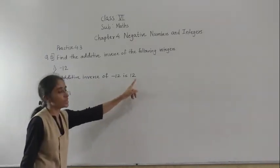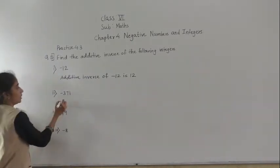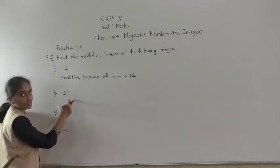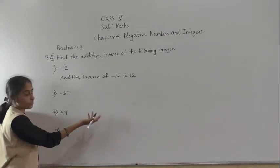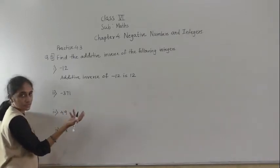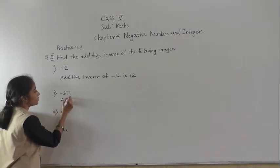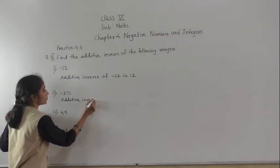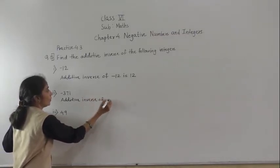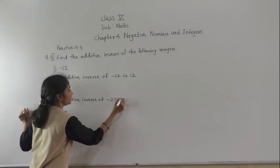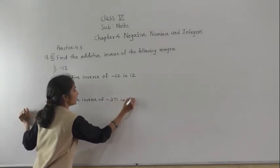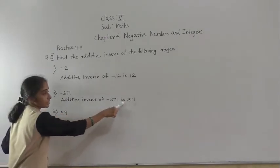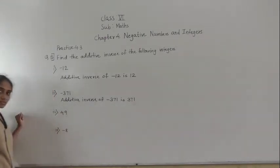The additive inverse of minus 12 is 12. The additive inverse of minus 371: plus 371 is 371. So the additive inverse of minus 371 is 371.